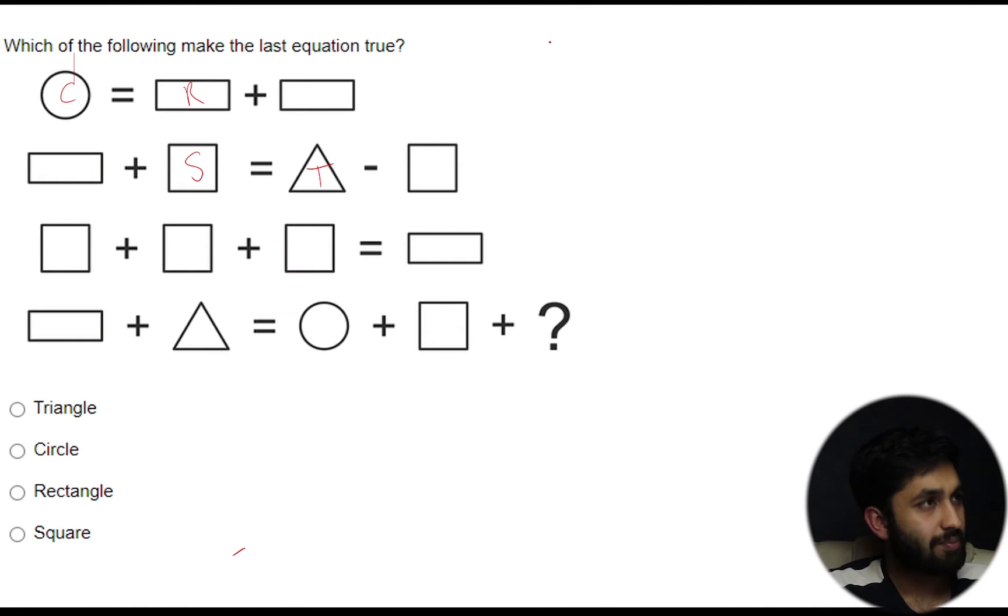So the first step is make one shape equal to one. Now which shape do we make equal to one? I would go with the equation with the shape that's in the most simplest equation. So that's this one here the first one. Circle equals rectangle plus rectangle.